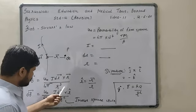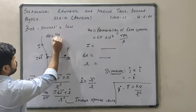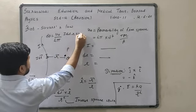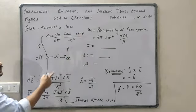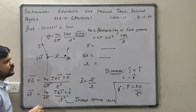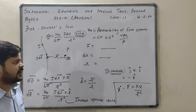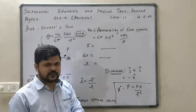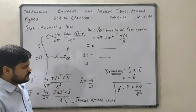We can also write the Biot-Savart formula as: dB = μ₀ upon 4π × I DL sinθ upon R². That means the magnetic field depends on the angle θ, whereas the electric field does not depend on any angle θ.